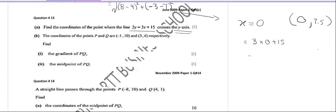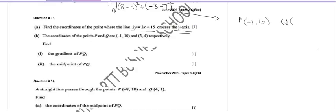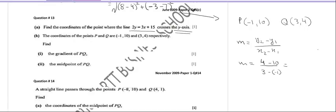This question is from the November 2009 Paper 1. The coordinates of points P and Q are given as P(-1, 10) and Q(3, 4). You have to find the gradient. Using m = (y2 - y1)/(x2 - x1): m = (4 - 10)/(3 - (-1)) = -6/4. Simplifying, that is -3/2, or -1.5. So the gradient is -1.5.